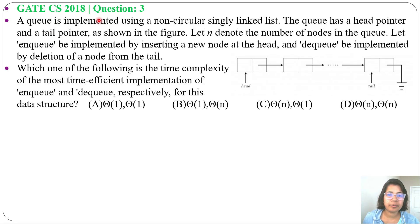Let's solve one previous question of queue and linked list. This question was asked in GATE CS 2018 question number 3. A queue is implemented using a non-circular singly linked list. The queue has a head pointer and a tail pointer as shown in the figure.